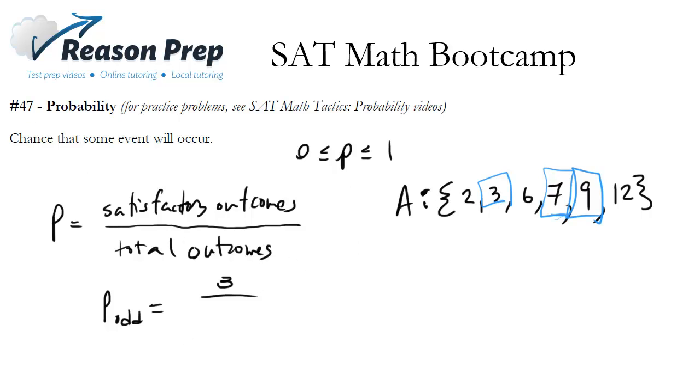Now we put it over the total number of outcomes, so that's how many numbers we've got. We've got 1, 2, 3, 4, 5, 6. So we put this over 6, and there we go, so the probability is 3 sixths or 1 half. And that's pretty much what you need to know for probability for the SAT.